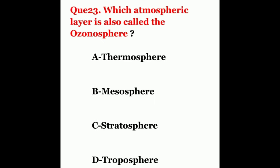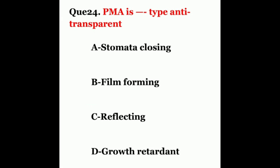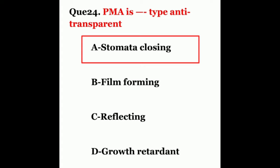Question twenty-three: which atmospheric layer is also called the ozonosphere? The options are thermosphere, mesosphere, stratosphere, or troposphere. The correct answer is stratosphere. Question twenty-four: PMA is which type of antitranspirant? The options are stomata closing, film forming, reflecting, or growth retarding. The correct answer is stomata closing type.